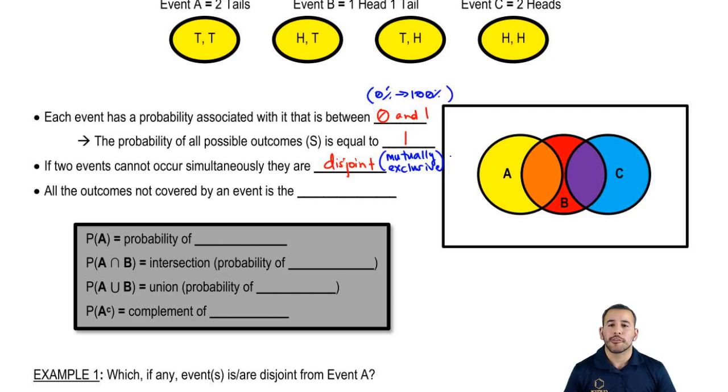Now, all the outcomes not covered by an event is considered the complement. Right? And so if we are talking about a die, roll a die, we get one. Right? So event A could be rolling a one. Now, what's the complement of A? It's rolling anything but a one. Does that make sense? So the complement of any event is basically all the other possibilities that this event in particular does not take into account.